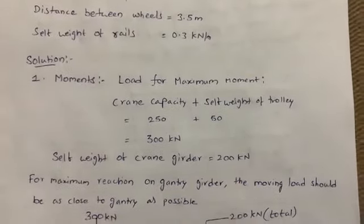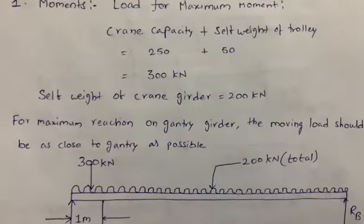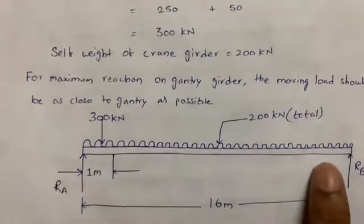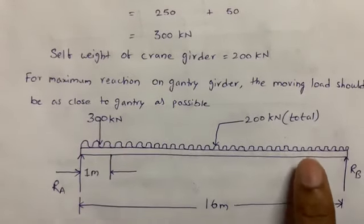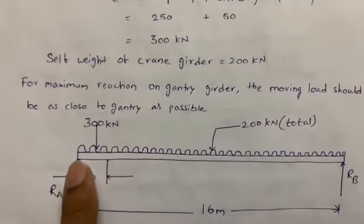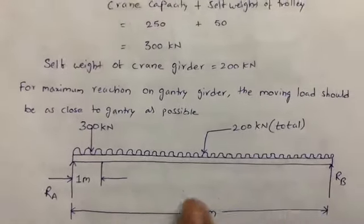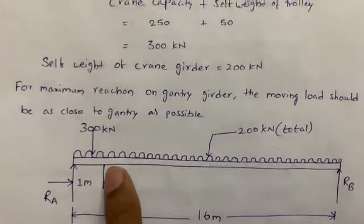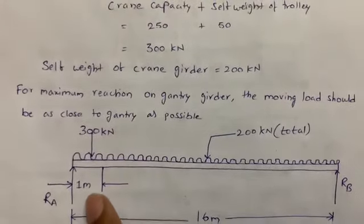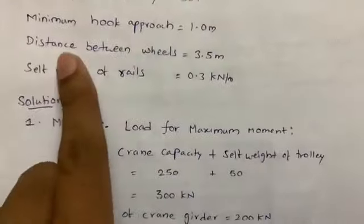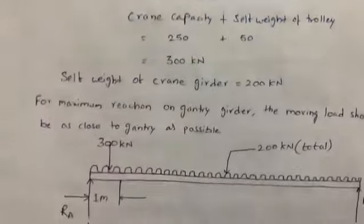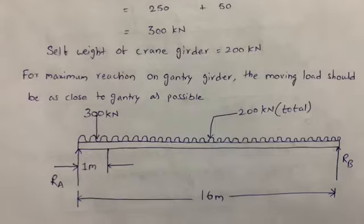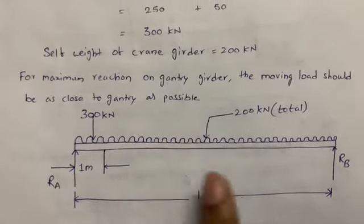For maximum reaction on the gantry girder, the moving load should be as close to the gantry girder as possible. The crane moves along the span with two supports at each end. The minimum hook approach is 1 meter, as given in the question — so the hook can only approach up to 1 meter from the support. From this setup, we need to find reactions RA and RB.